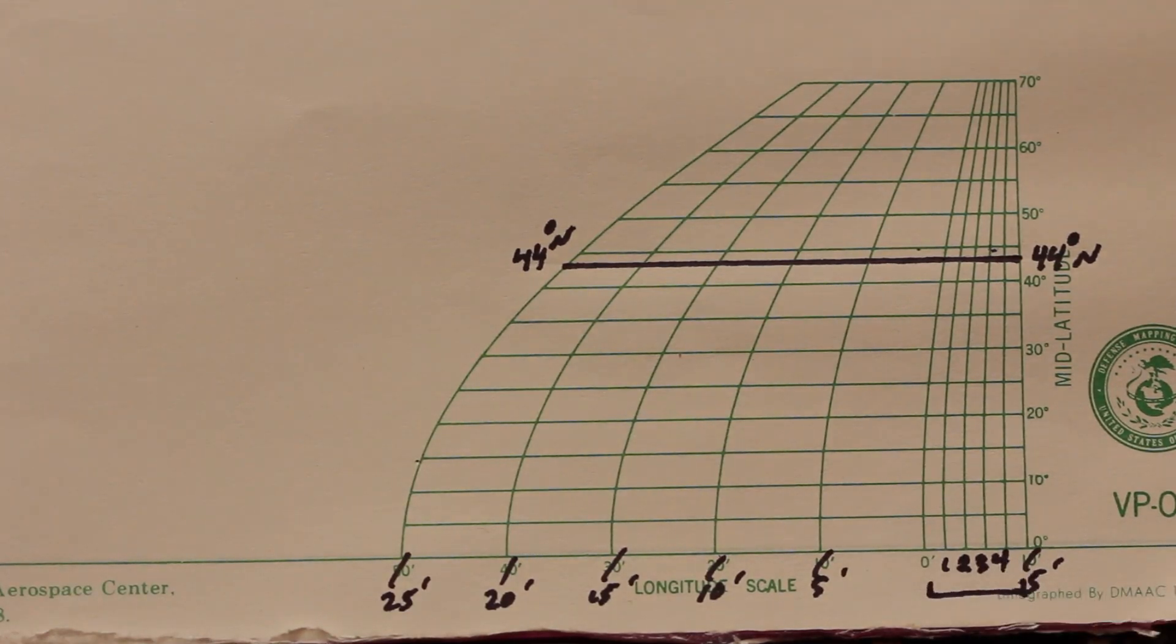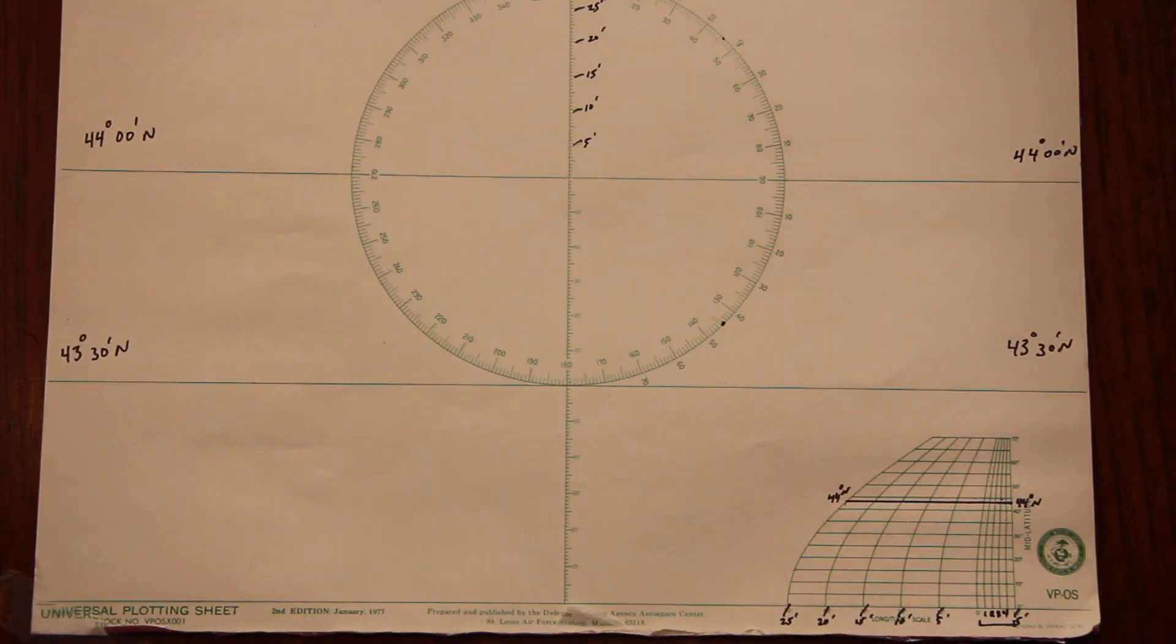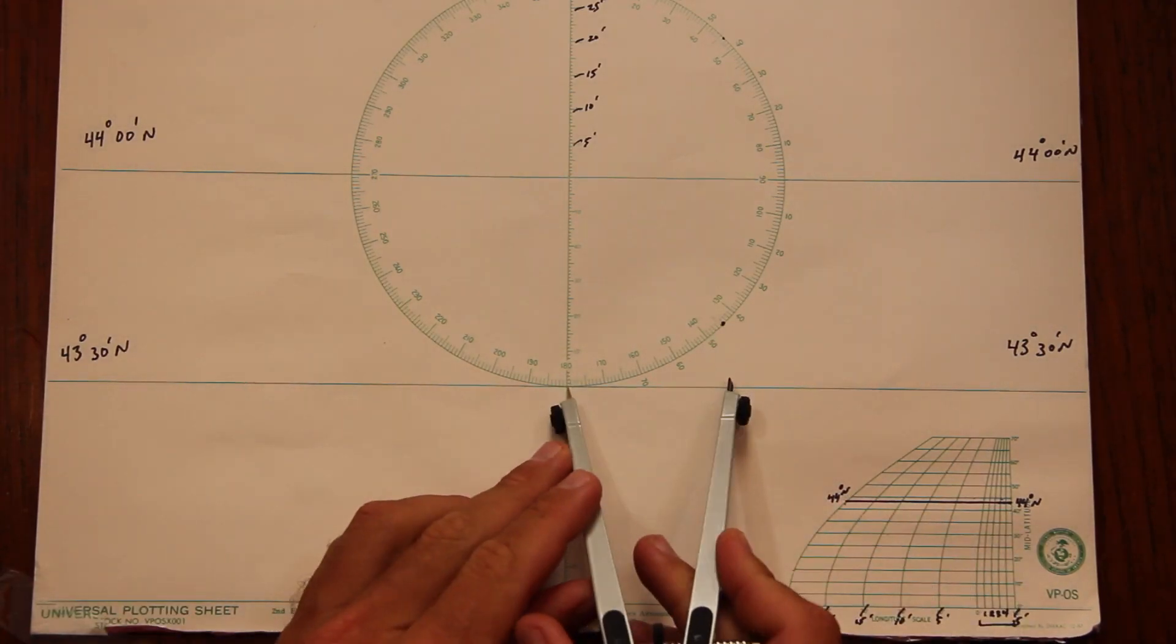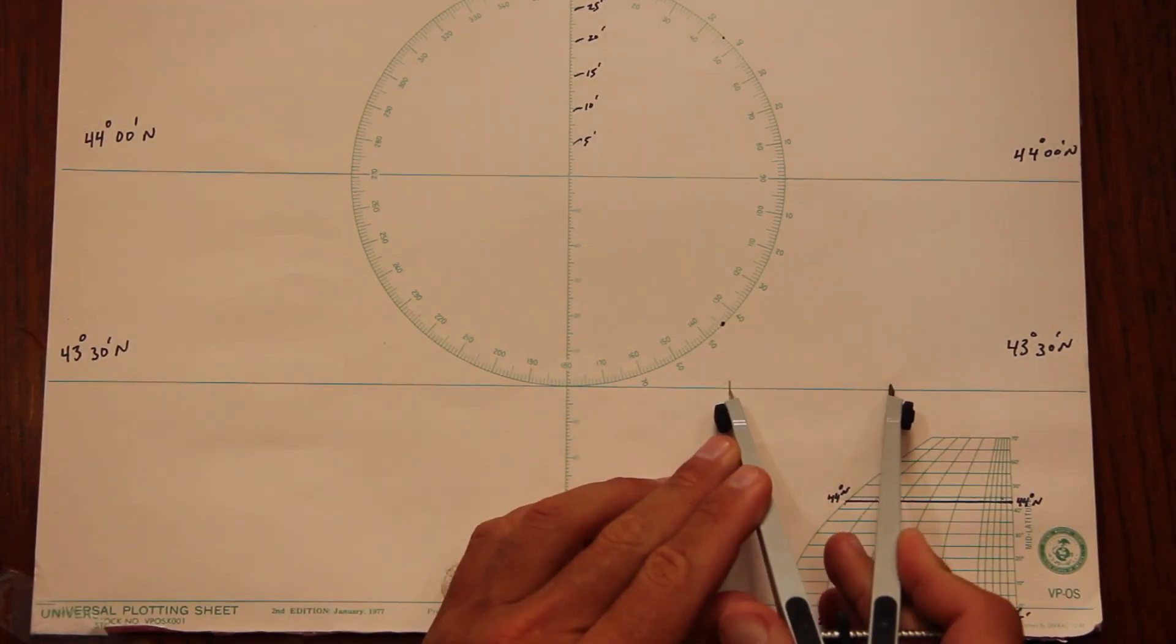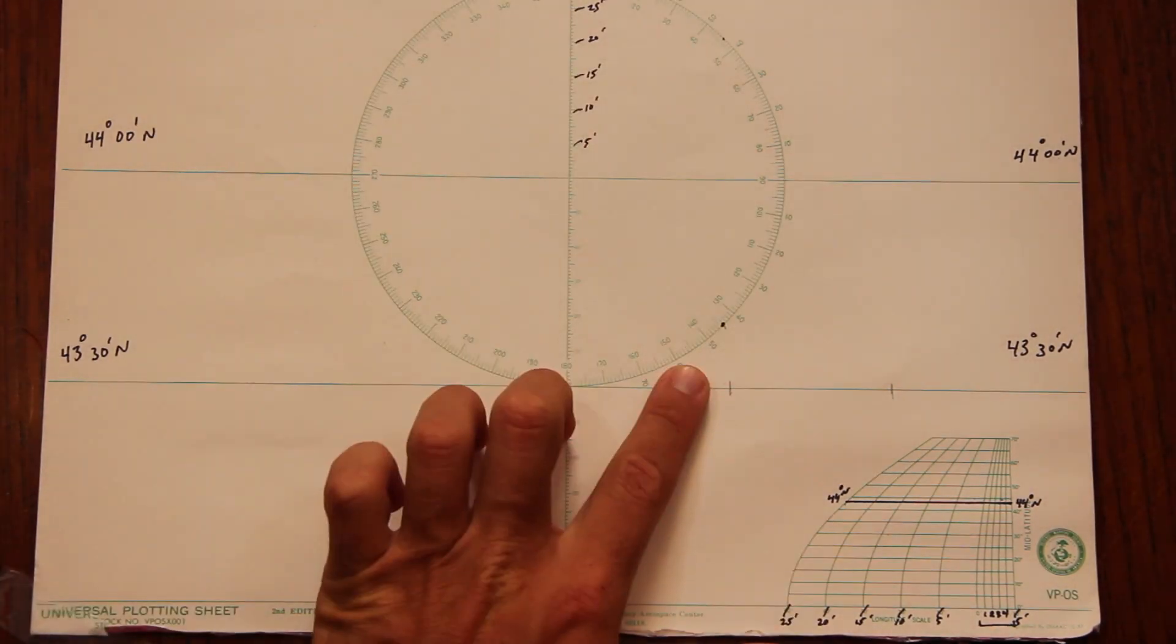Now there's another way to determine your longitude marks instead of just using the scale on the center of the UPS. That's to measure using the longitude scale on the bottom right, but as you can see, they're equivalent. So this portion of the video just shows you the second way to do it.